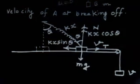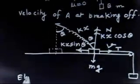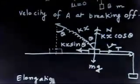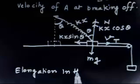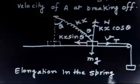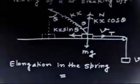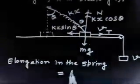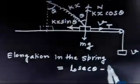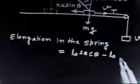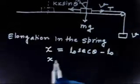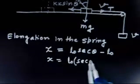First, let us find the elongation in the spring. The initial length is L0. When the spring makes angle theta with the horizontal, the new length will be L0/cos(theta), that is L0·sec(theta). So the spring elongation x equals L0·sec(theta) minus L0, which can be written as L0·(sec(theta) - 1).